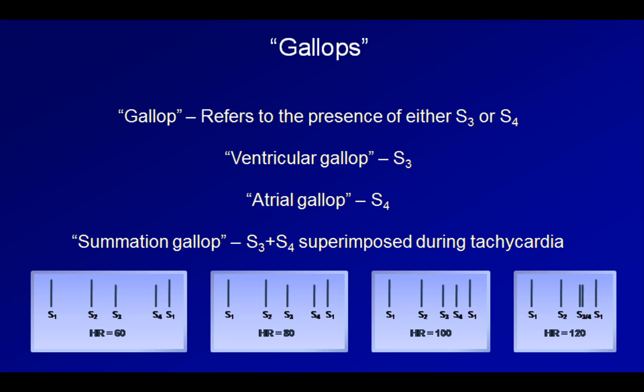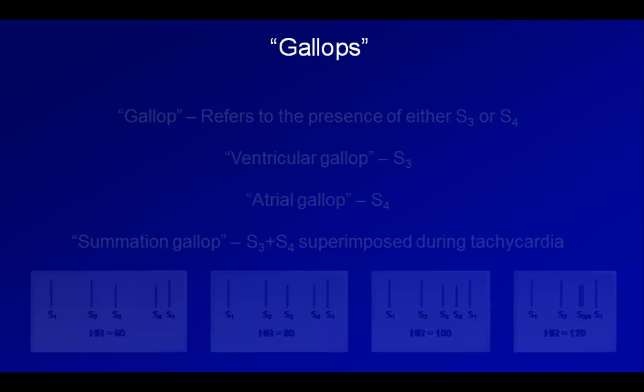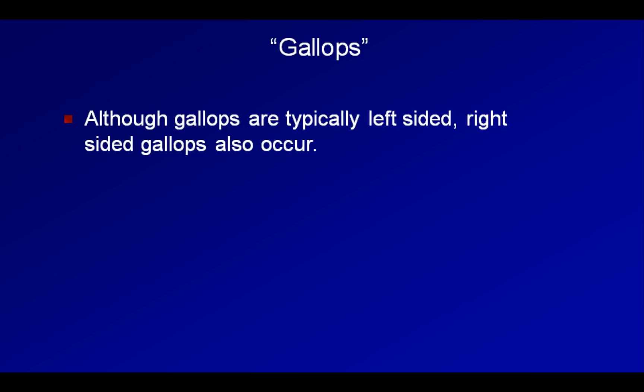Gallops usually originate from the left side of the heart but can on occasion originate from the right side as well. Aside from a slight difference in location where they are best appreciated, left and right gallops can also be differentiated by the effect of respiration. The most common left-sided gallops heard in CHF get softer with inspiration, while the rarer right-sided gallops — for example a right-sided S3 in a massive pulmonary embolism — get louder with inspiration.